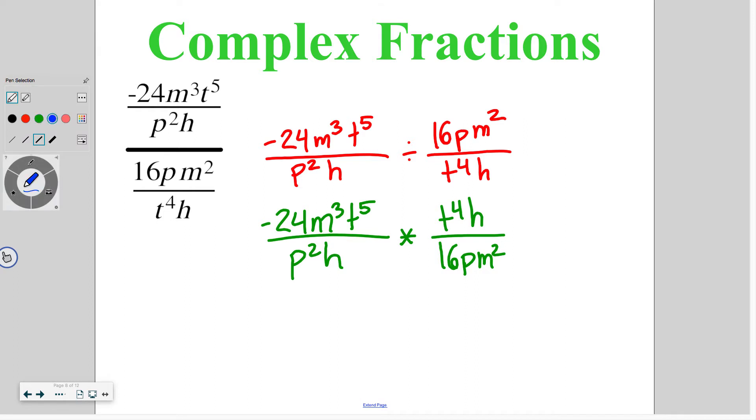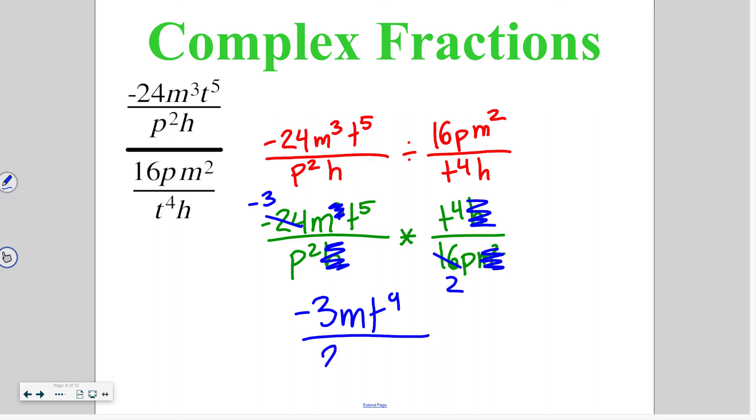Then we're going to go ahead and cancel out where we can. 16 and 24 can both be divided by 8. So I've got a negative 3 and 2. m to the third can be reduced and canceled with m squared. So that cancels out and we're left with just one m. Looking at the other way, h cancels out with h. So up top, we are left with negative 3 m, t to the fifth and t to the fourth which gives me t to the ninth and then on the bottom I'm left with 2 p squared and p which gives me p to the third. So all those pieces left over combine into our final fraction.